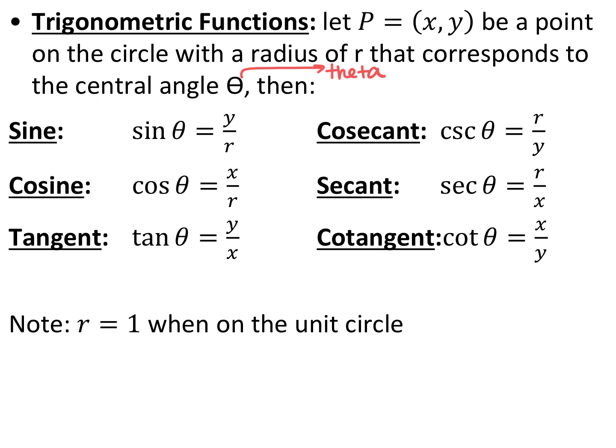Now the six trig functions. We have a point P at coordinates x, y with radius r on a circle. Sine of theta is y over r. Cosine of theta is x over r. Tangent of theta is y over x. The other three are reciprocals: cotangent is x over y, secant is r over x, and cosecant is r over y. On the unit circle, the radius is 1.